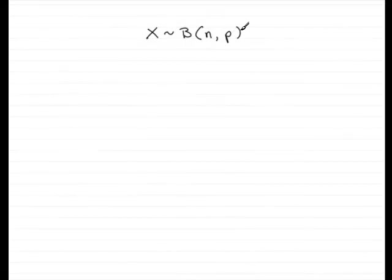Hi. Welcome to this tutorial on the mean and variance of a binomial distribution. Now if I have a random variable X which is distributed binomially where there are n trials and the probability of success is p,